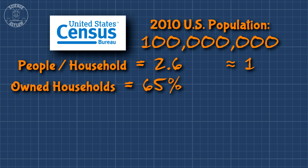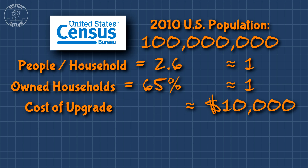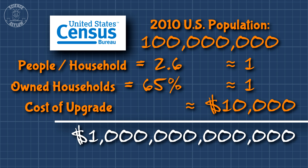Only 65% of homes are owned, which rounds up to 100%, or 1. By orders of magnitude, energy efficient upgrades cost $10,000. $100 million times 1 times 1 times $10,000 is $1 trillion. And for comparison, that's the same order of magnitude as the 2008 bank bailout.